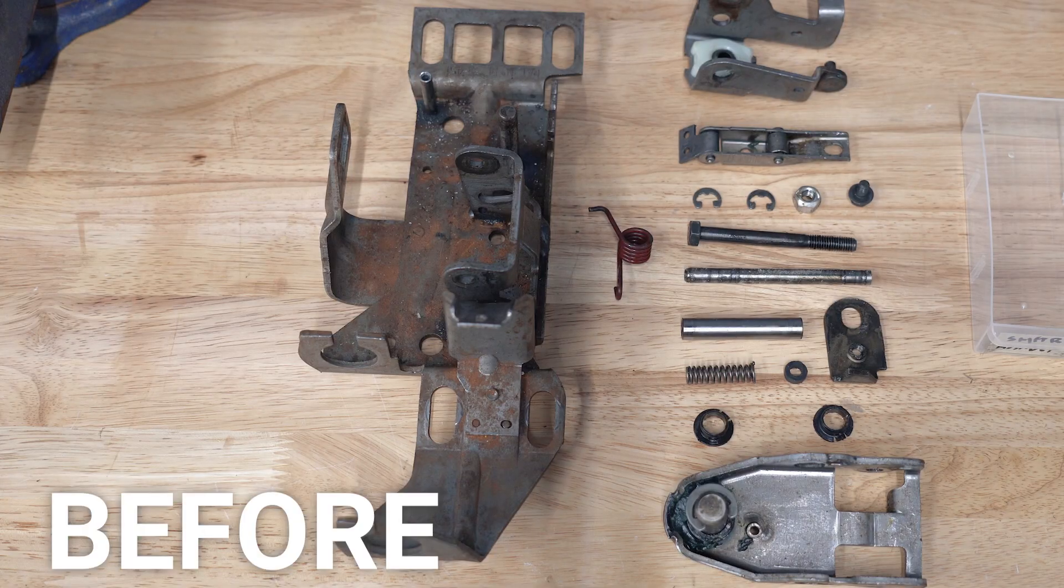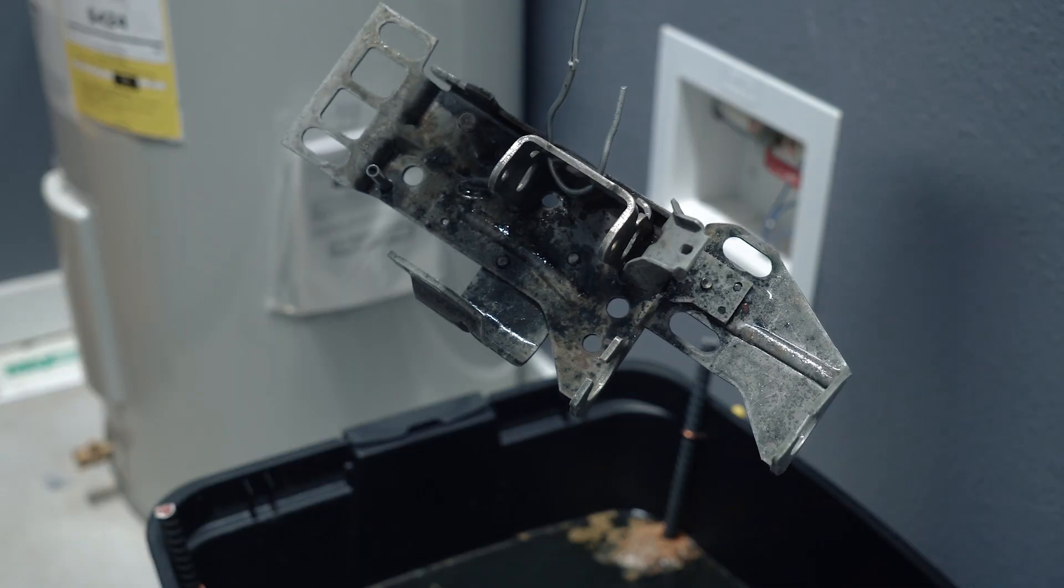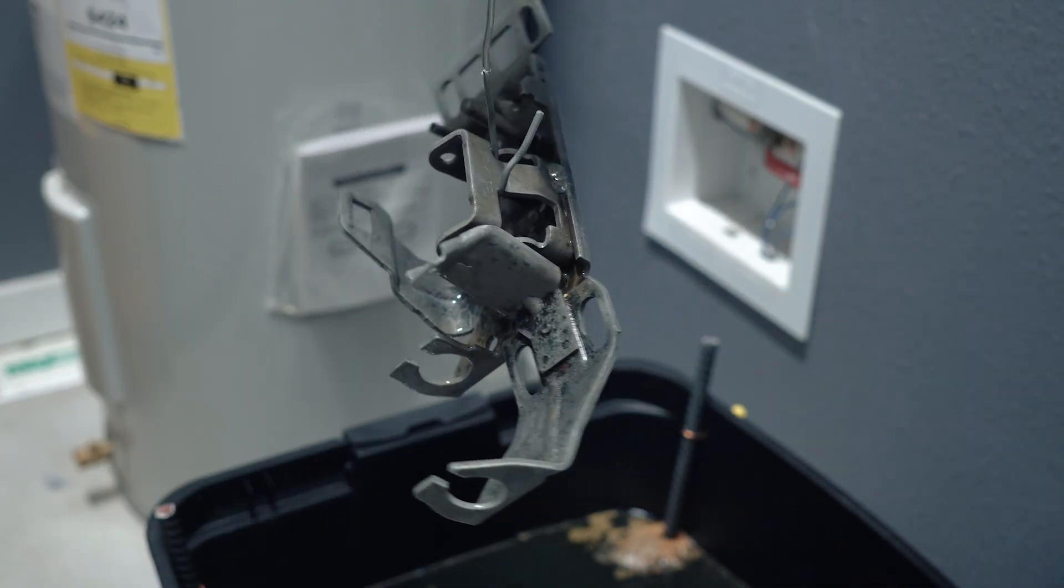As you can see, the rust has turned into this black crud. It's a lot easier to remove than the rust, but it still requires some elbow grease.